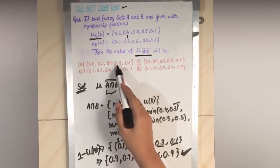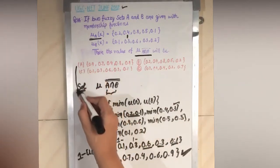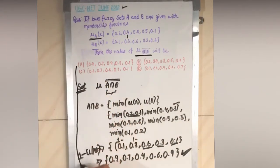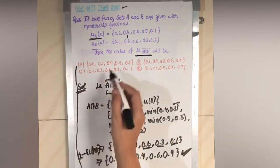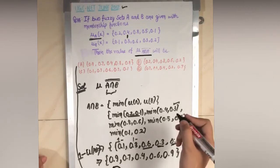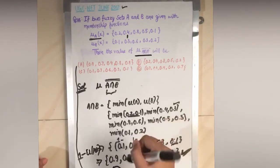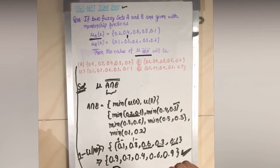Checking against the answer options — 0.9, 0.7, 0.4, 0.6, and 0.9 — one element may differ slightly, possibly due to a minor working mistake. Option A is the correct answer.